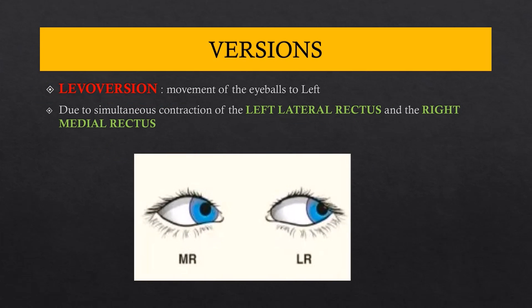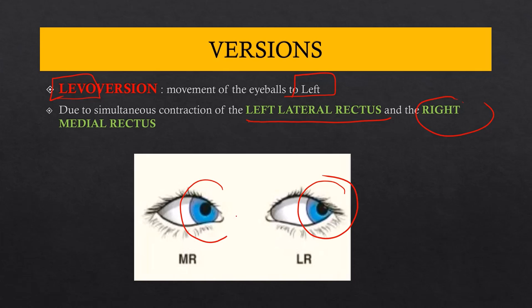Levoversion refers to movement of the eyeball towards the left side. This happens because of simultaneous contraction of the left lateral rectus, which causes abduction, and the right medial rectus, which causes adduction — both acting together to achieve levoversion.